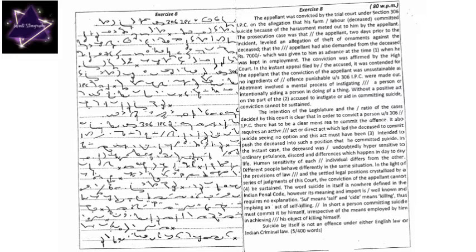Sui means self and cide means killing, thus implying an action or an act of self-killing. In short, a person committing suicide must commit it by himself, irrespective of the means employed by him in achieving his object of killing himself.